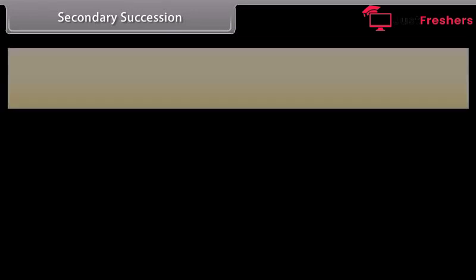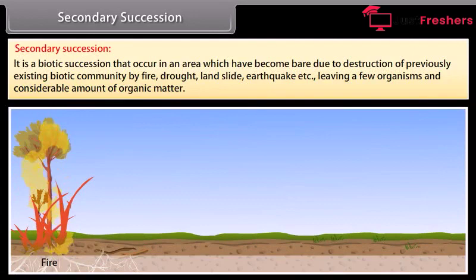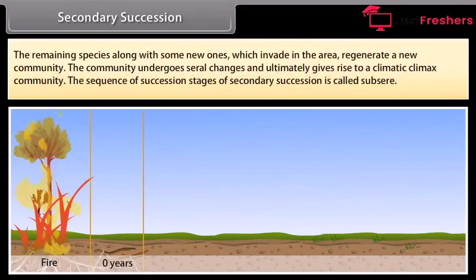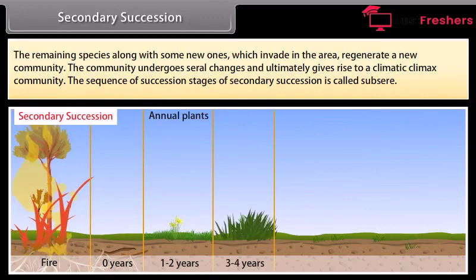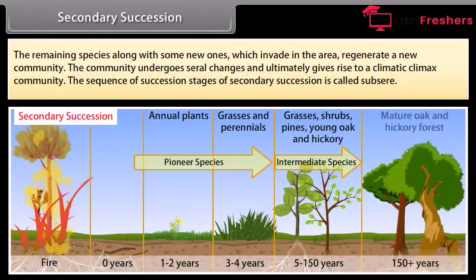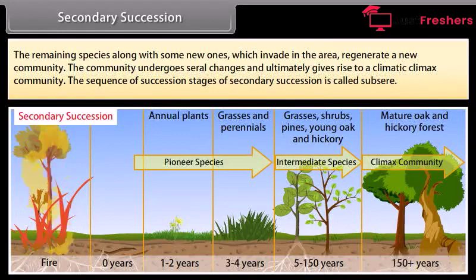Secondary succession occurs in an area which has become bare due to destruction of a previously existing biotic community by fire, drought, landslide, earthquake, etc., leaving a few organisms and considerable organic matter. The remaining species, along with some new ones that invade the area, regenerate a new community. The community undergoes several changes and ultimately gives rise to a climax community.